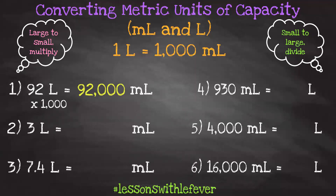Now, 3 liters will be equivalent to how many milliliters? Again, we're going from large to small, so we multiply: 3 times 1,000. That gives us 3,000.